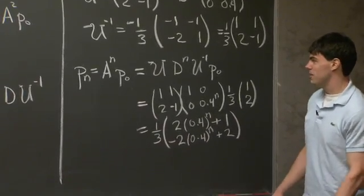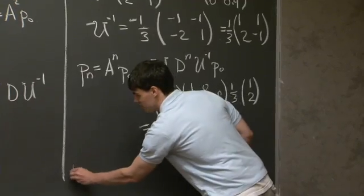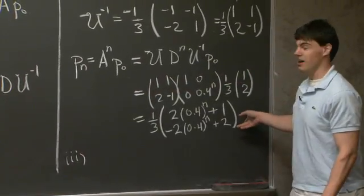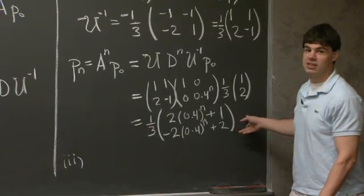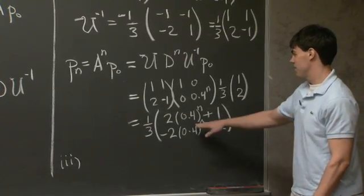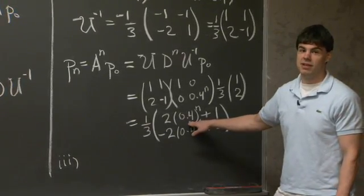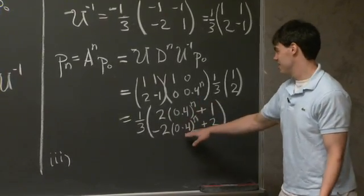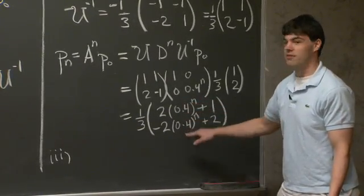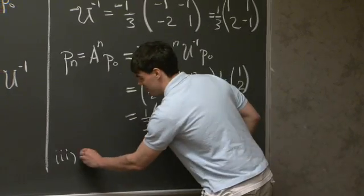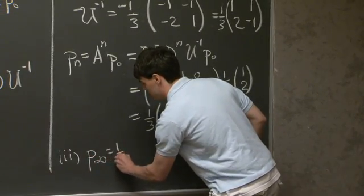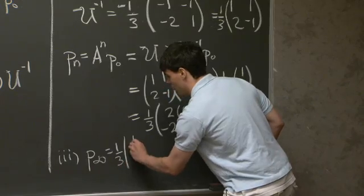And then lastly, for part 3, what happens when n goes to infinity? Well, we have the answer for any n, so we can just take the limit as n goes to infinity. Now specifically, as n goes to infinity, 0.4 raised to some very large power vanishes. So these two terms drop off. And at the end of the day, we're left with P infinity is 1 third, 1, 2.